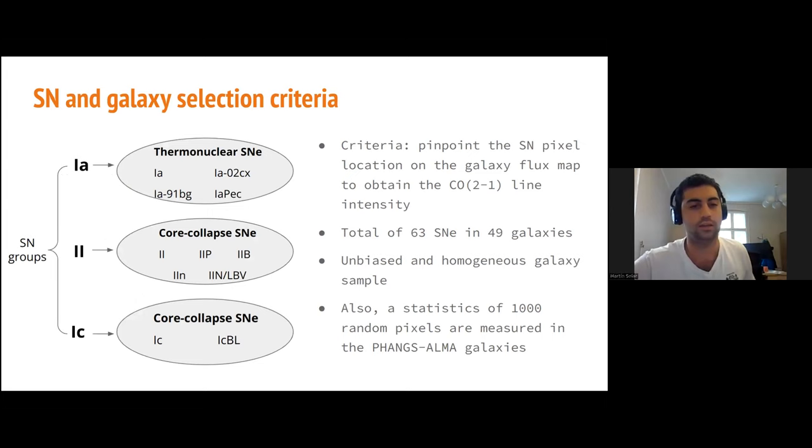The methodology to extract the values is very simple: locate the supernova position in the PHANGS database and extract the CO line intensity. This gave us 63 supernovae in 49 galaxies. I want to mention that this galaxy sample has comparable masses and luminosities, which is a homogeneous sample. Also, in order to have standard statistical measures, 1000 random pixels are measured in every galaxy.